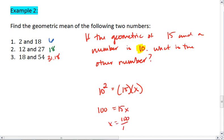X equals 100 divided by 15. And we get approximately 6.67. Or if you want to, you can write 6 and 2 thirds. So the geometric mean of 6 and 2 thirds and 15 is 10.